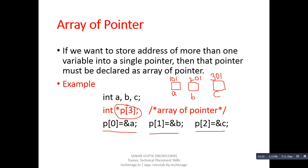So if we declare an array of size 3, then using this statement p[0] equals to address of A, we are assigning 101 under the index number 0.